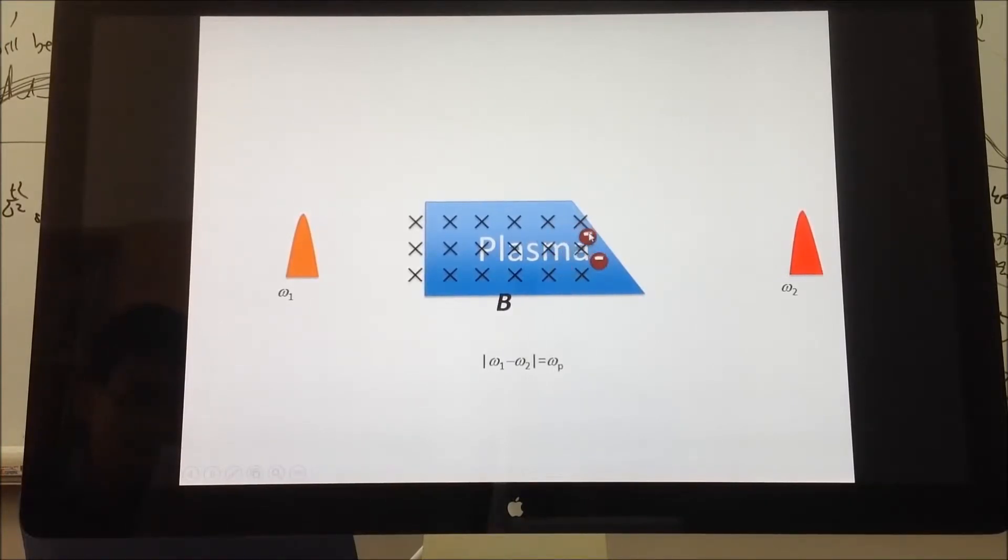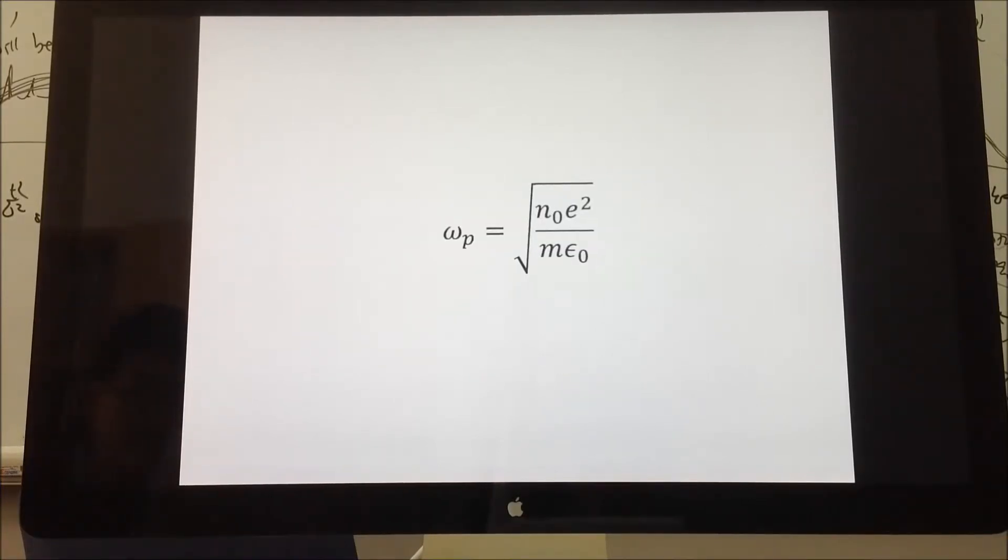From the transverse component of this oscillation, a radiation is emitted. Here the radiation frequency is the same as the plasma frequency, which is determined by the plasma density. For typical plasma densities of laser-plasma interactions, this frequency comes into a few terahertz regime.